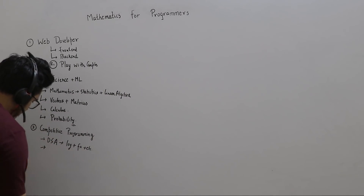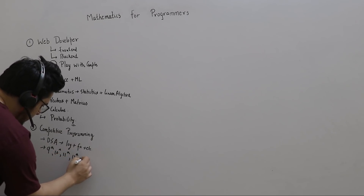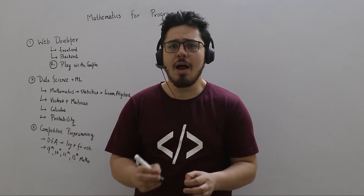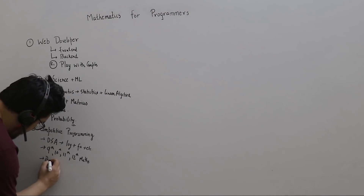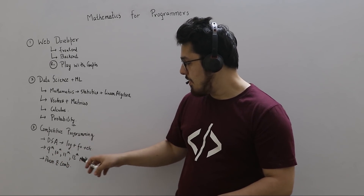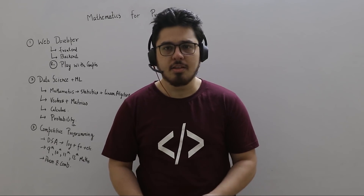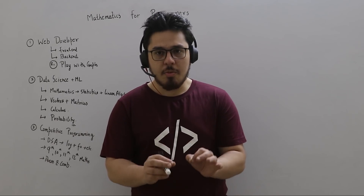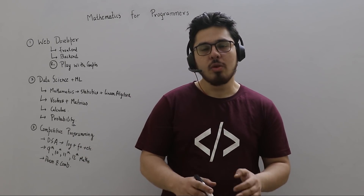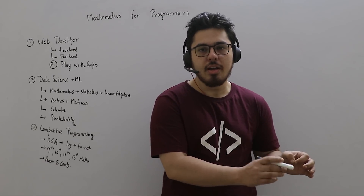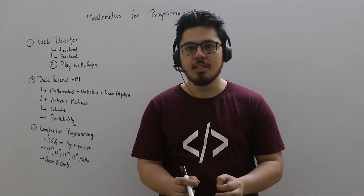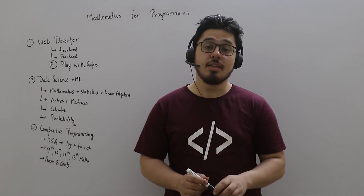For competitive programming, I will add some topics from 9th, 10th, 11th, and 12th grade maths. You can reiterate that mathematics and learn specific topics automatically. A shout-out to permutations and combinations, which appear frequently. Reiterate and learn specific topics, and you will find yourself using them regularly in competitive programming.